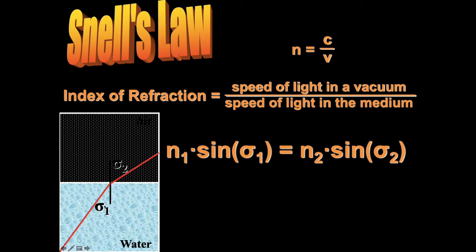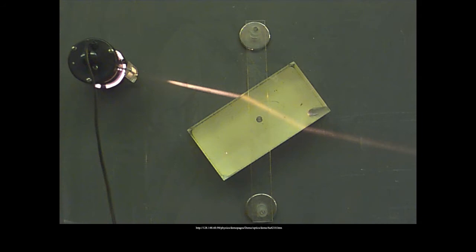The relationship between these two angles follows this equation. The index of refraction of water times the sine of this angle of incidence is going to be equal to the index of refraction of air times the sine of this angle of refraction. And that's Snell's Law in a nutshell.